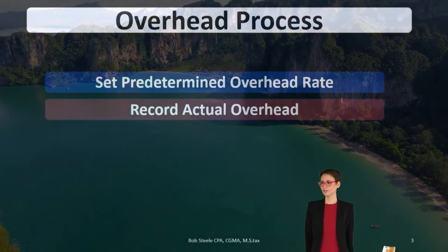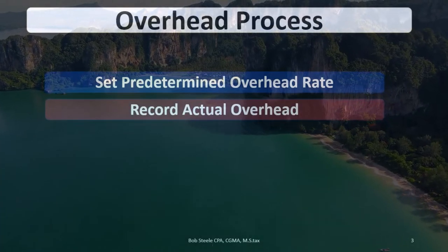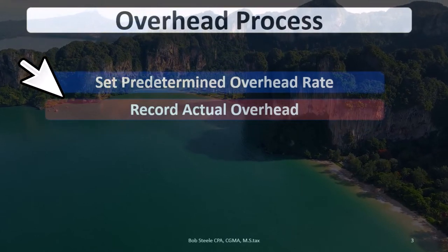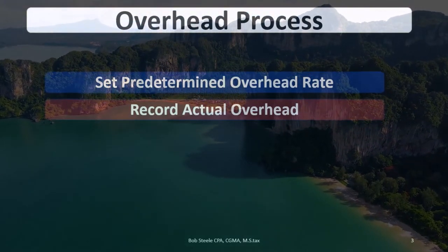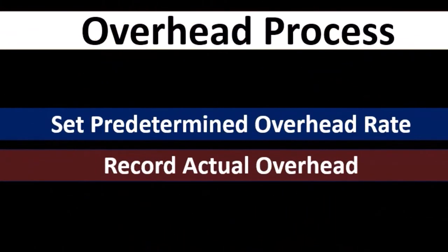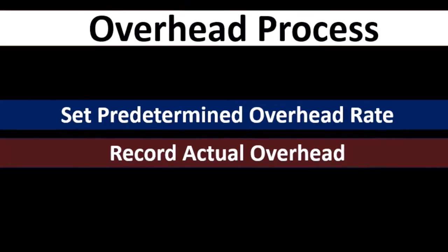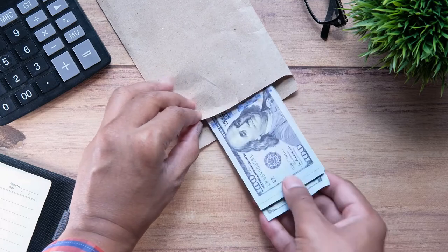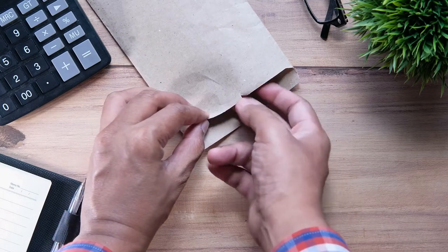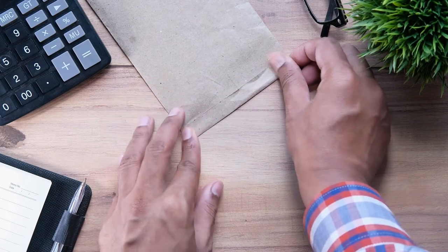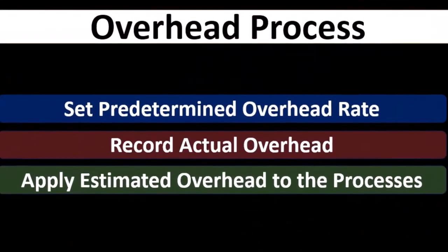Then we record actual overhead — the overhead that will be incurred throughout the month. This is not an estimate. We don't have to estimate what the actual overhead is; we know the actual amount, but we don't know which process to apply it to. There may also be some timing issues as to when we should apply them out.